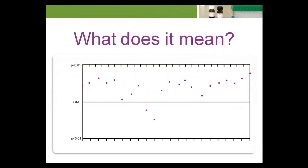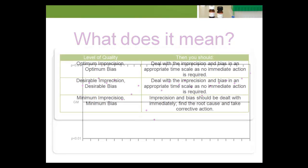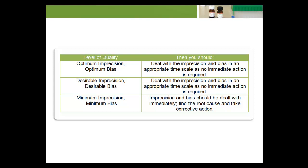What does it mean when the TE plot shows a lot of dispersion and relative bias? Again, this pattern is related to the level of performance chosen in constructing the total error plot. If the quality chosen was optimum or desirable for both imprecision and bias, neither represents an immediate problem and can be dealt with in an appropriate timescale. On the other hand, if minimum imprecision and minimum bias were used to construct the plot, then both should be dealt with promptly, or the laboratory risks reporting unreliable patient test results.